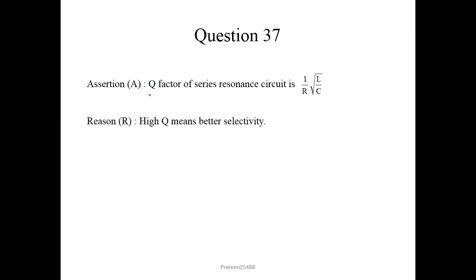Now question number 37. Q factor of a series resonance circuit is 1 over R under root L upon C. So this is correct. High Q means better selectivity. This is also correct. So here both are correct. But this is not the correct explanation of assertion. So again we will choose option 2.